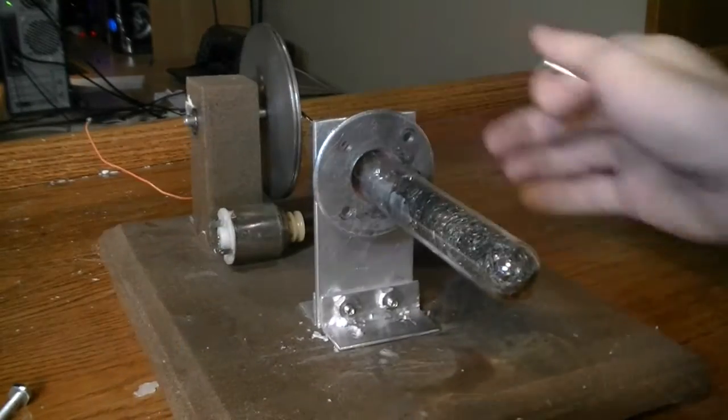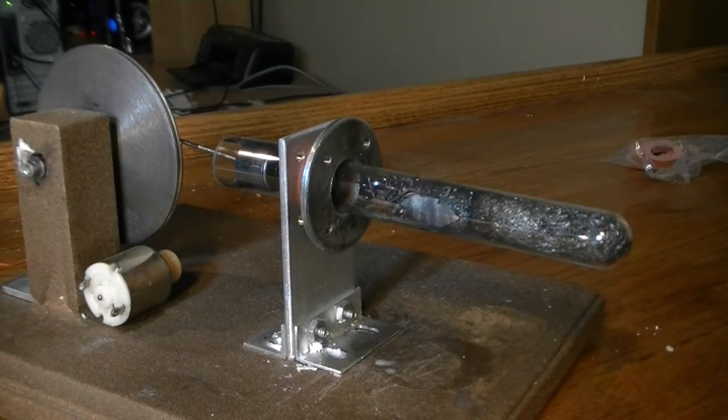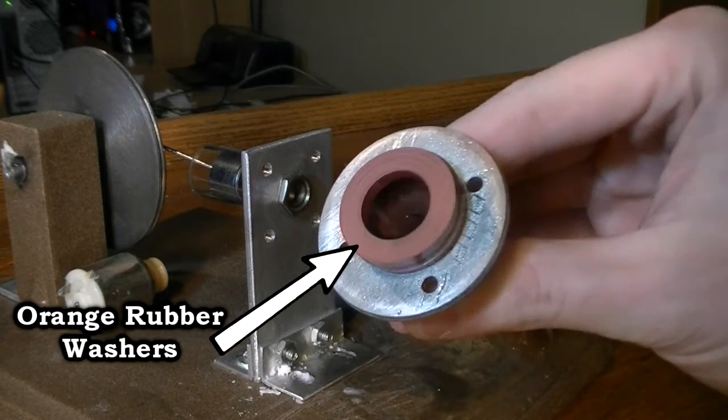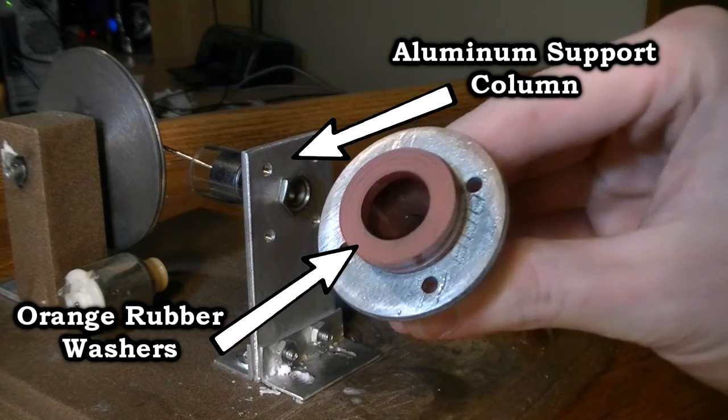Normally gravity would cause this test tube and steel washer to fall, but all the heat and pressure have caused the orange rubber washers to stick to the support column as well as the large steel washer.